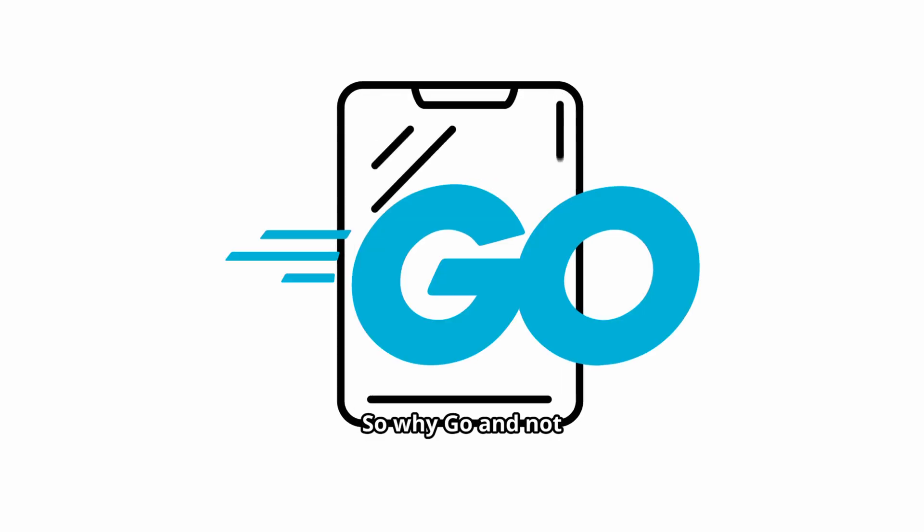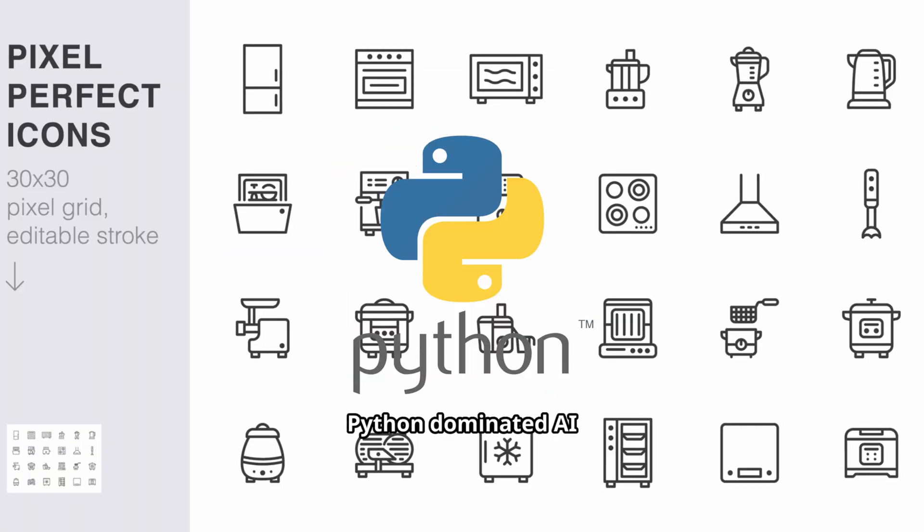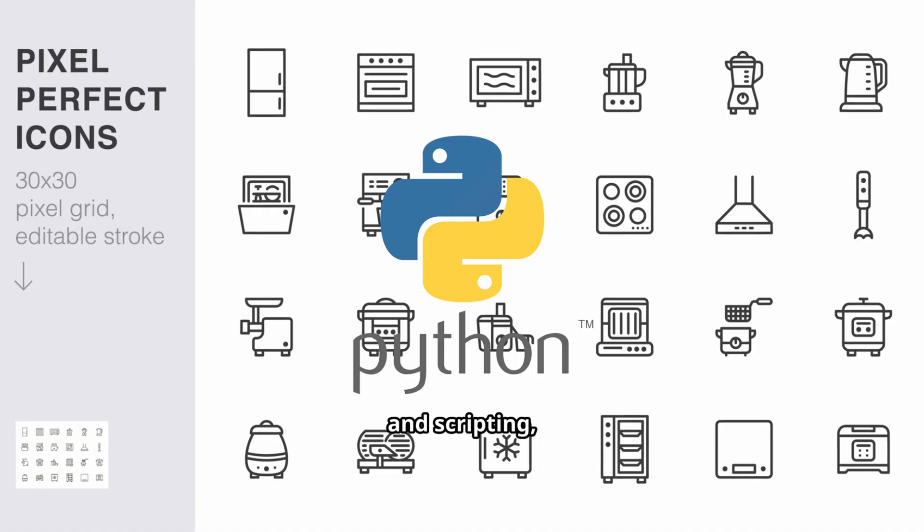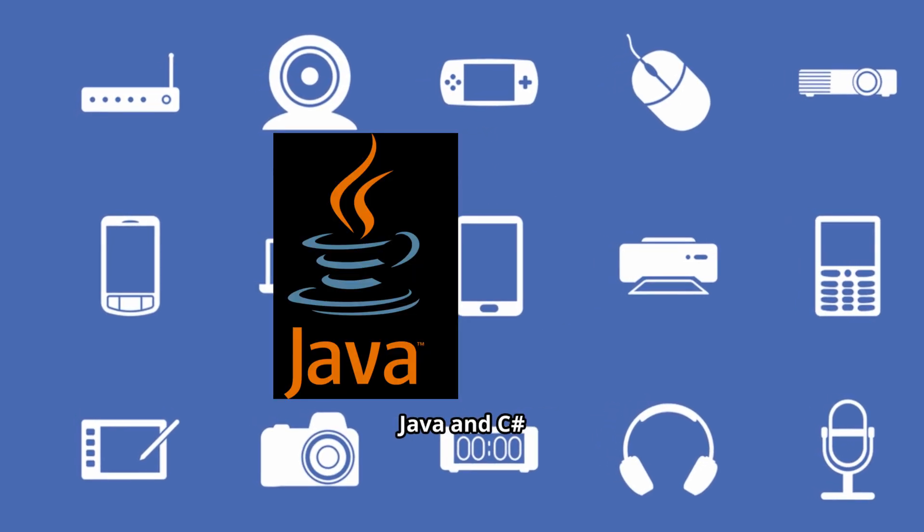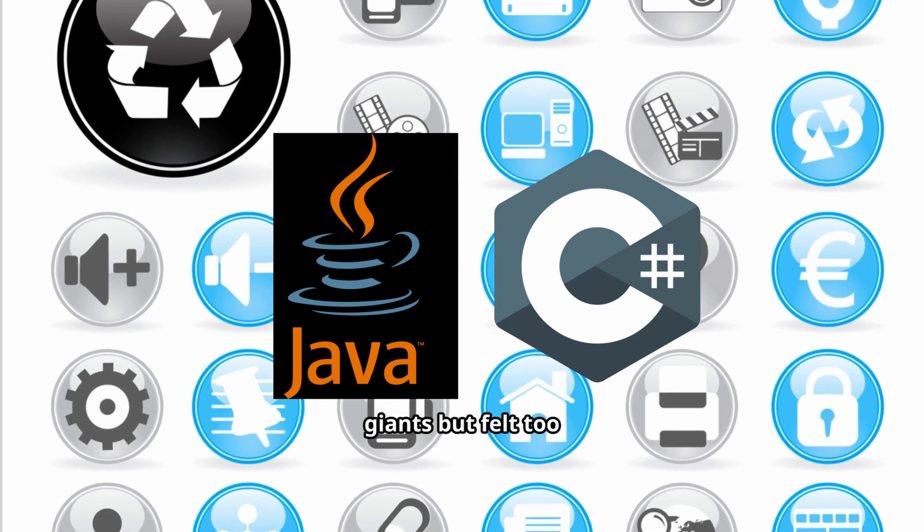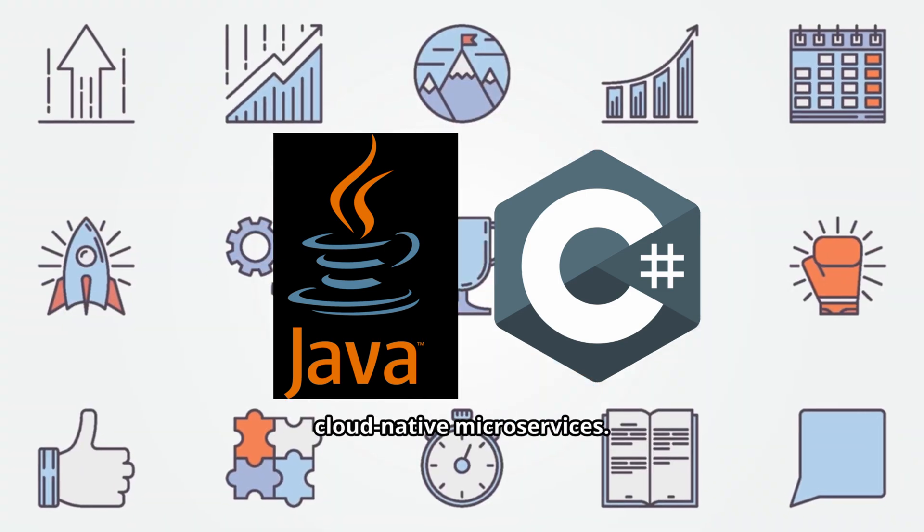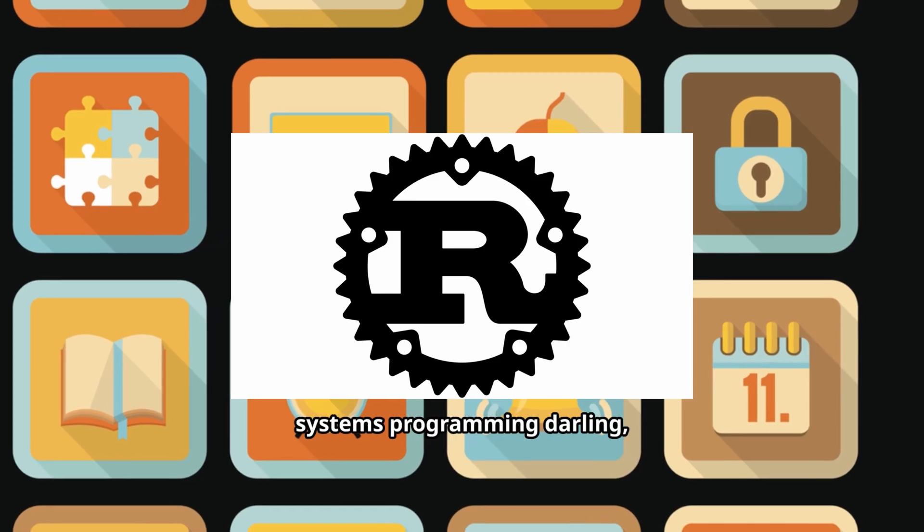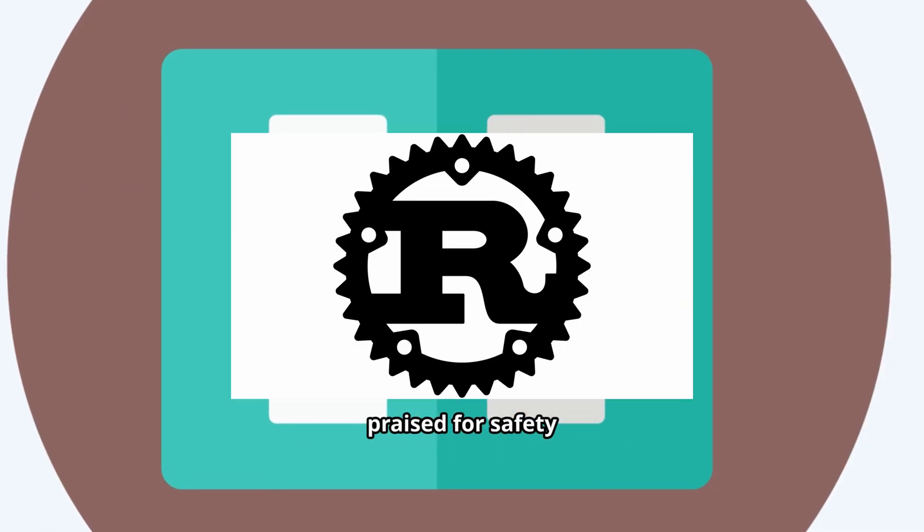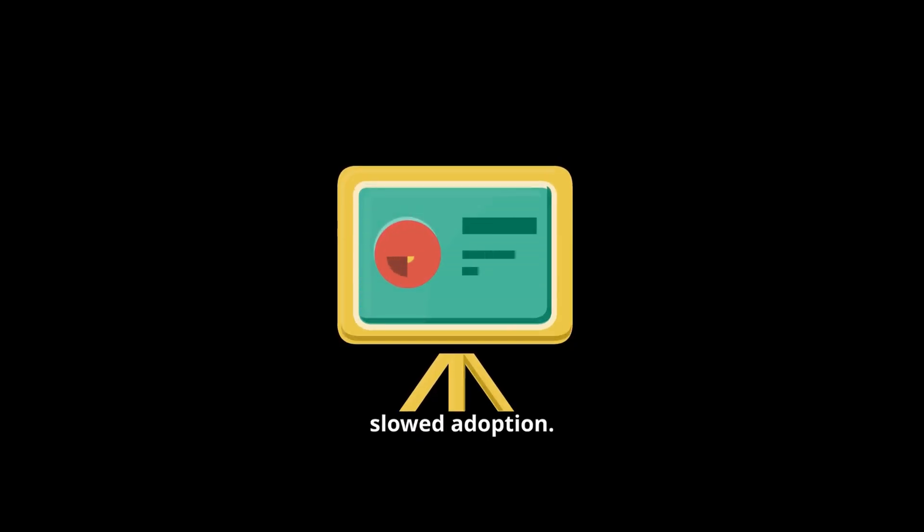So why Go and not something else? Python dominated AI and scripting, but it struggled with raw concurrency and performance. Java and C Sharp remained enterprise giants, but felt too heavy for cloud-native microservices. Rust emerged as a systems programming darling, praised for safety and performance. But Rust's steep learning curve slowed adoption.